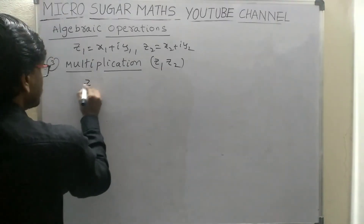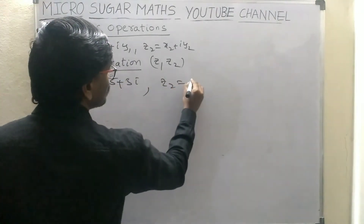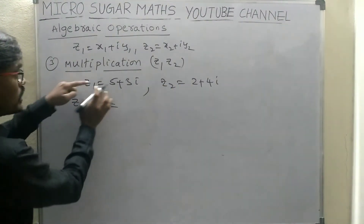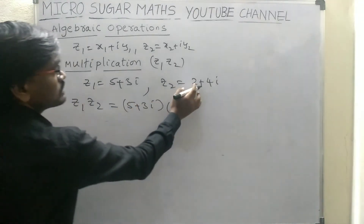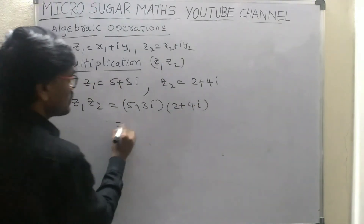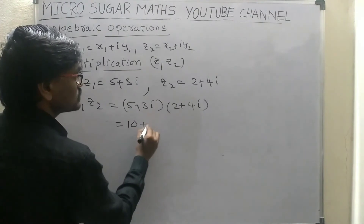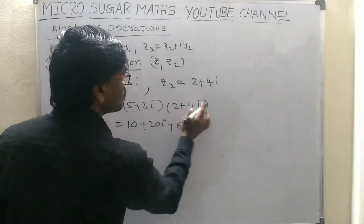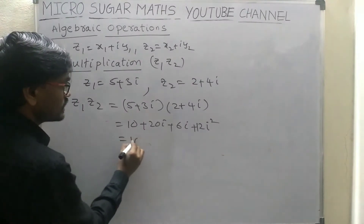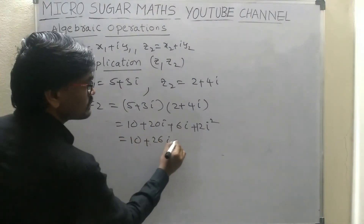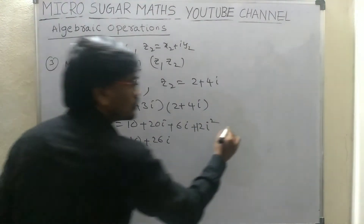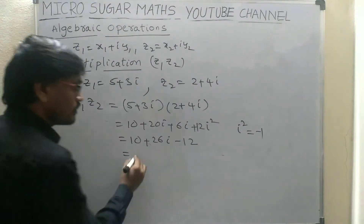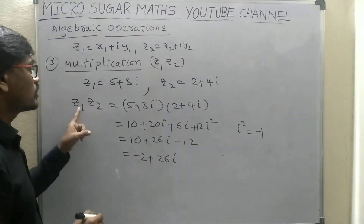Let us take Z1 is equal to 5 plus 3i and Z2 is equal to 2 plus 4i. Then what is the product of these two complex numbers? Z1 into Z2 is equal to (5 plus 3i) into (2 plus 4i). Expanding: 5·2 = 10, 5·4i = 20i, 3i·2 = 6i, 3i·4i = 12i². Now 10 plus 20i plus 6i plus 12i². Since i² equals minus 1, we get 10 minus 12 plus 26i, which is minus 2 plus 26i.